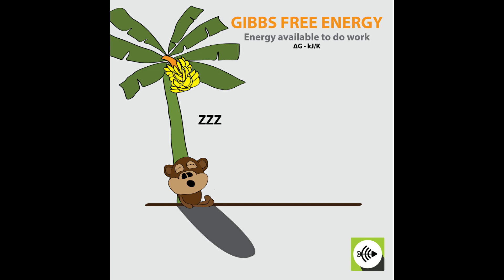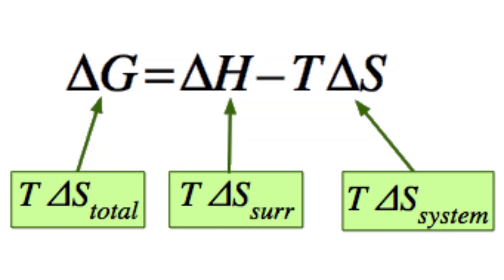The type of energy that flows into our bodies needs to be free energy, which is the energy that we use to do work. There is a special equation dealing with free energy called Gibbs free energy that we will cover in future videos. This equation tells us whether different processes are energetically unfavorable — i.e., they create order, which is against the disorder of the universe — or if they are energetically favorable, and increase the entropy or disorder of the universe.